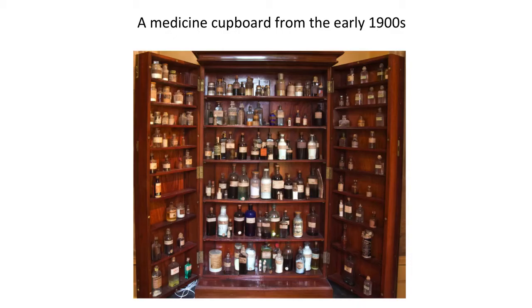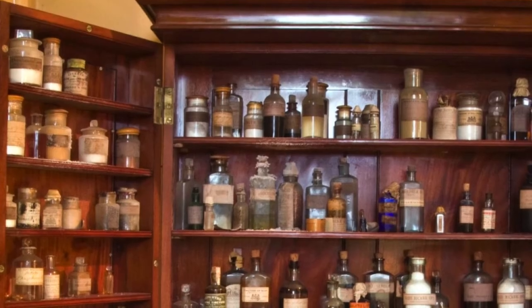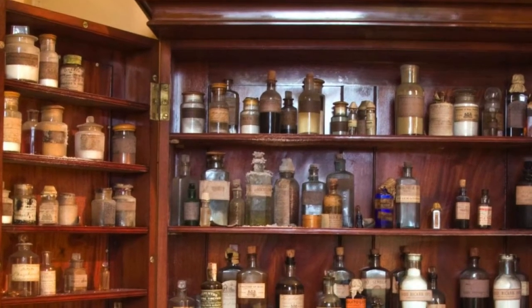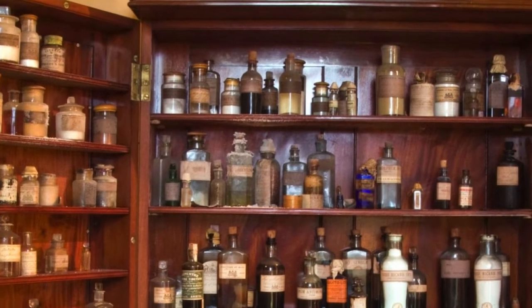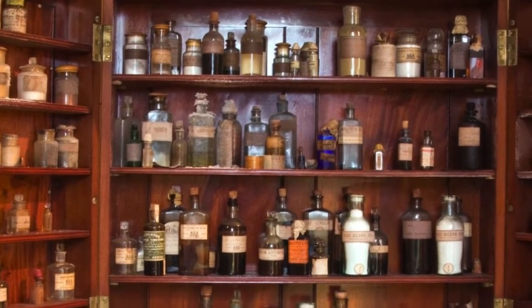I've always been fascinated by chemistry, and I found this very old medicine chest quite fascinating. Back in the 1900s there was a lot of poison in medicine chests and a lot of very unusual things that you wouldn't see today — for example, potassium cyanide, lead nitrate, as well as often elements.